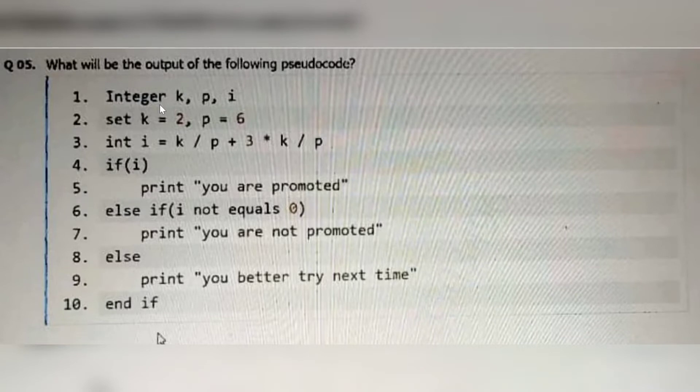Integer K, P and I. K is 2 and P is 6. So I equal to K by P that is 2 by 6 plus 3 into 2 divided by 6. Plus has less precedence than slash, that is division and multiplication. So first these two will be evaluated then we will add those. So 2 by 6 that is 1 by 3 means a positive decimal value. So 3 into 2 that is 6, 6 by 6 output is 1. So 1 plus a decimal value, output is 1 because I value is rounded up to 1.